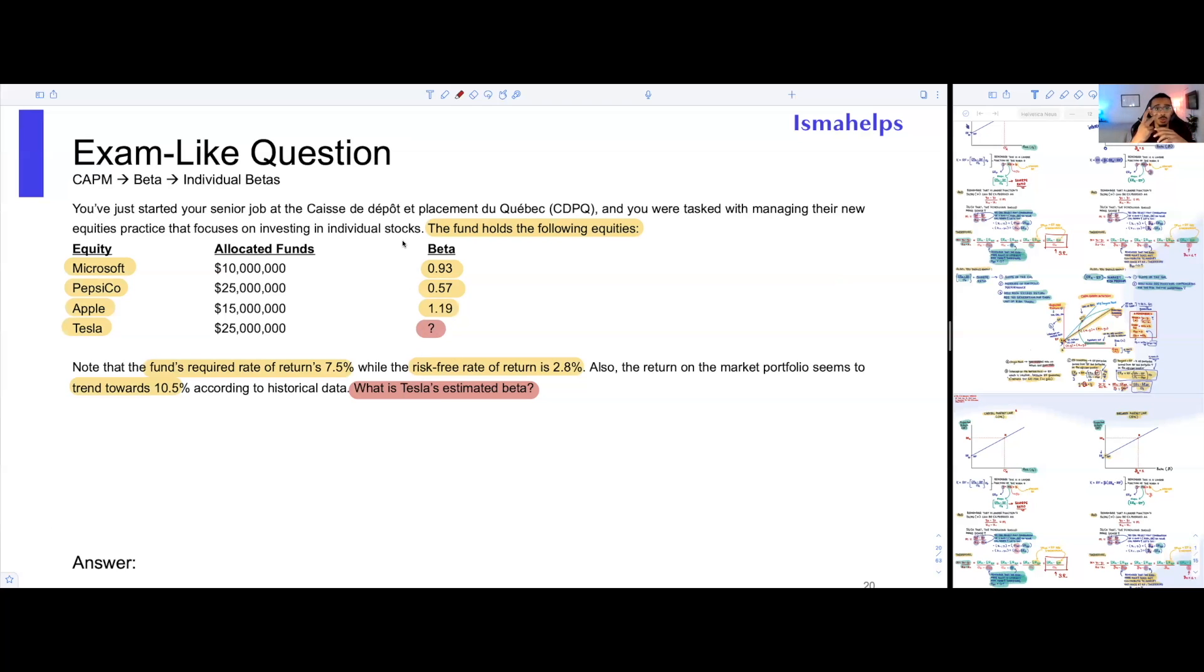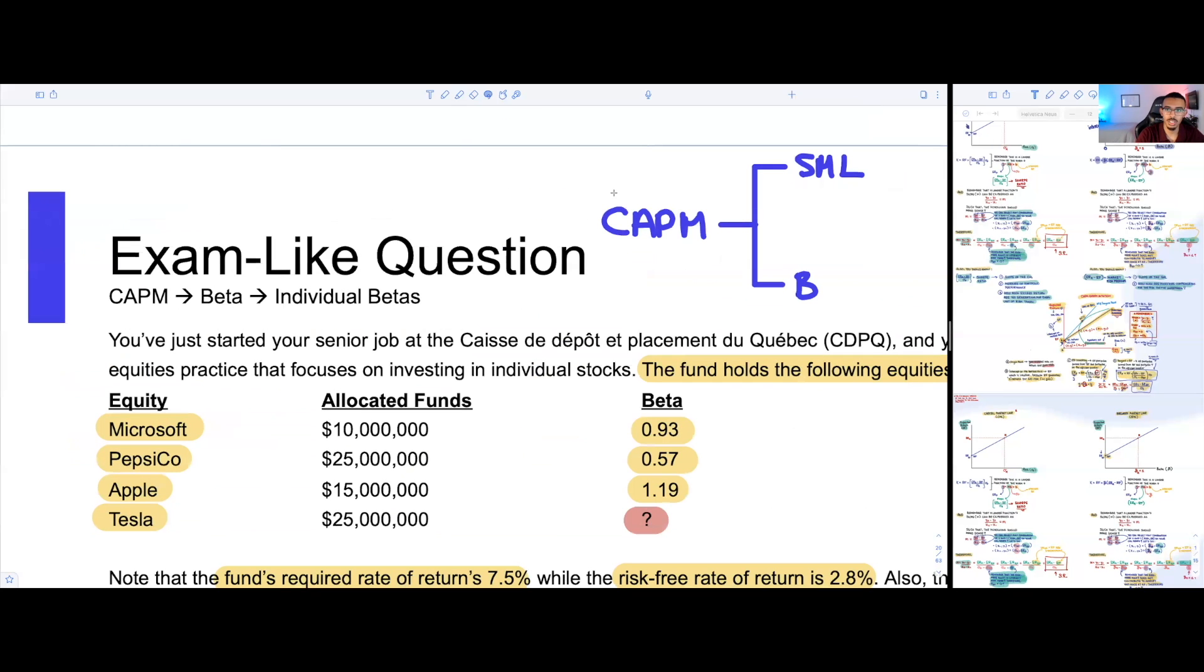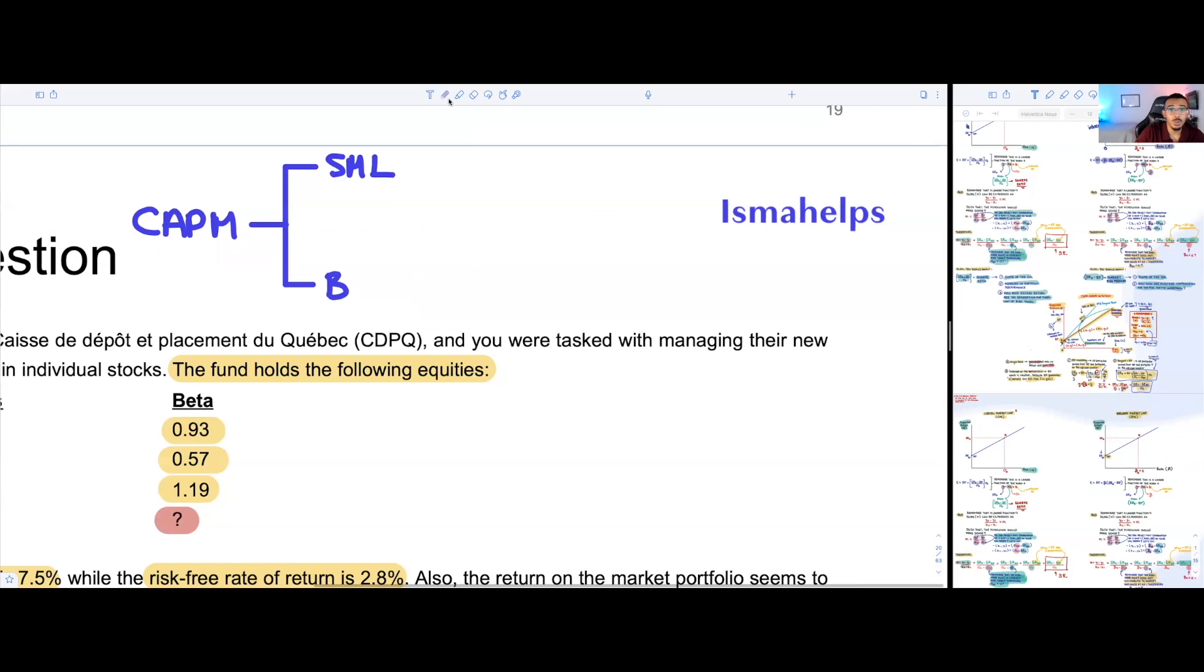But before we get there, the question also tells you that you need to note the fund's required rate of return is 7.5%. And the risk-free rate of return is a beautiful number, 2.8%. The return on the market portfolio seems to trend towards 10.5%. Now, what is Tesla's estimated beta? So they really told you, we're solving for Tesla's estimated beta. So this is going to be our mission, the purpose of this question. We're solving for this little random number here that we don't know yet.